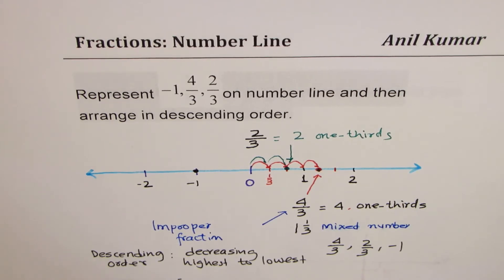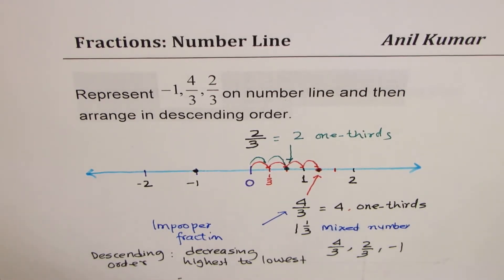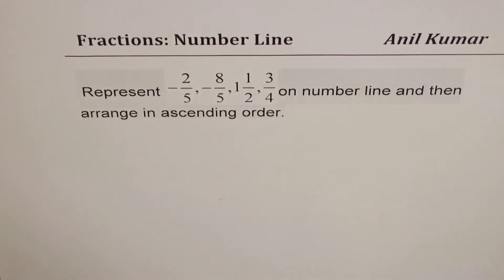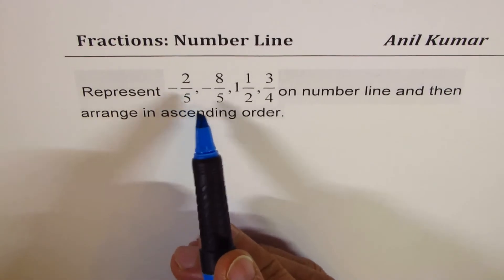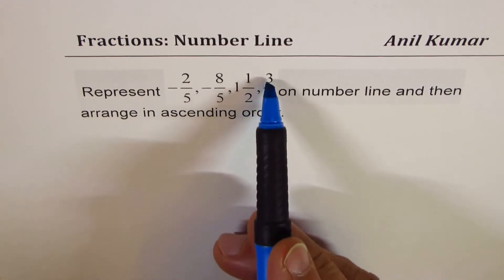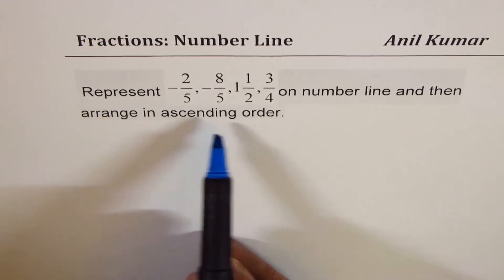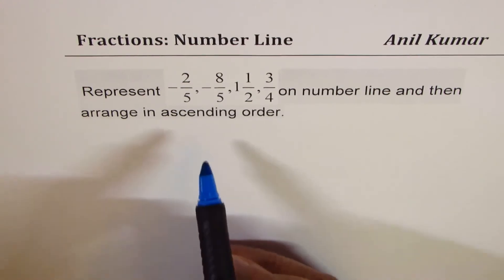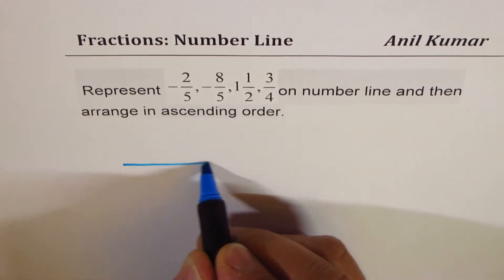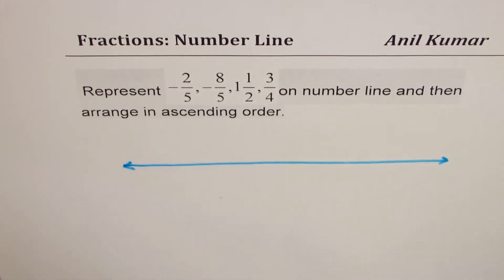Here is a test question for you: represent -2/5, -8/5, 1 and 1/2, and 3/4 on a number line, then arrange them in ascending order — that means increasing order. You can pause the video, answer this question, and then check with my solution.